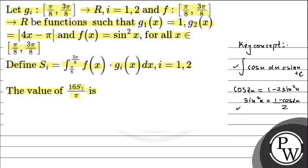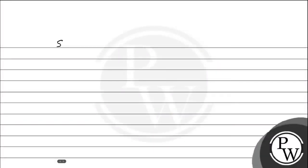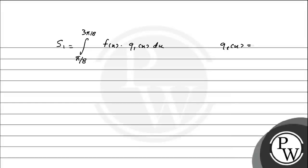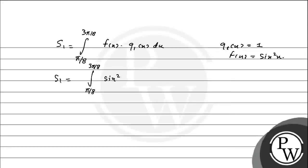यहाँ हमें S1 find करना है, तो i की value 1 होगी। तो S1 क्या हो जाएगा? S1 = ∫(π/8 to 3π/8) f(x)·g1(x) dx. अब g1(x) हमारे पास 1 है और f(x) हमारे पास sin²x है। तो S1 = ∫(π/8 to 3π/8) sin²x · 1 dx.